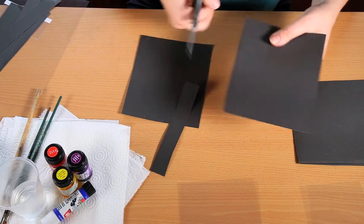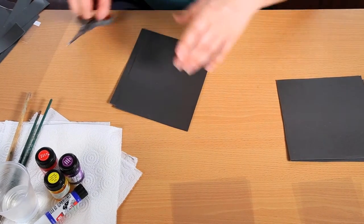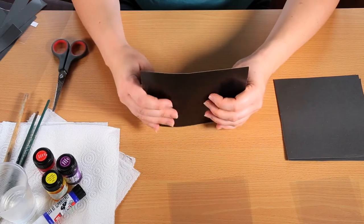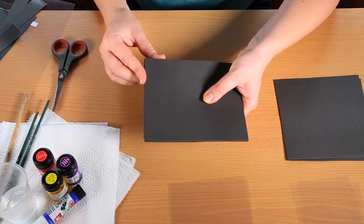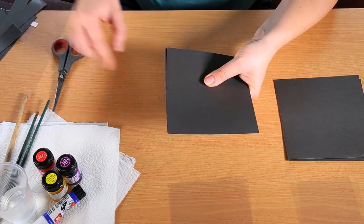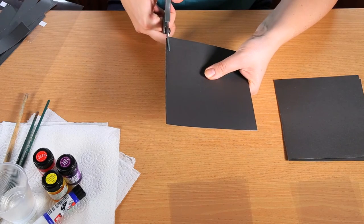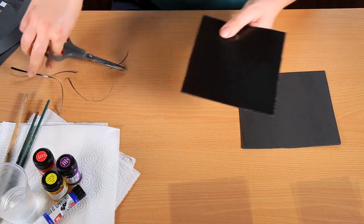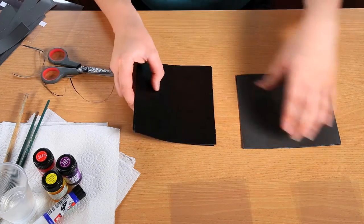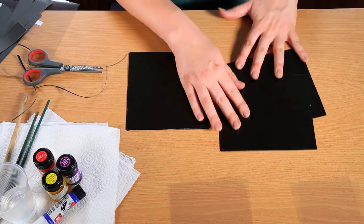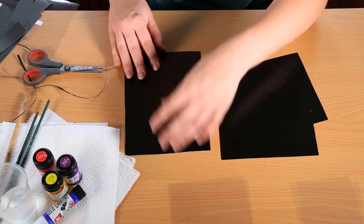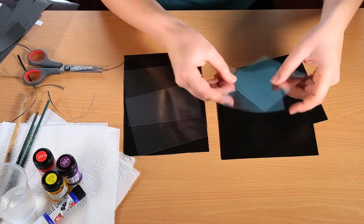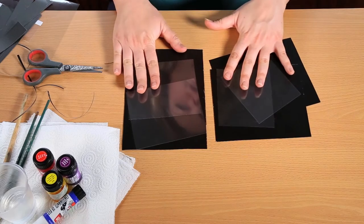Okay, so that's done. And then what I suggest you do is just double check - you want to put them against each other and just cut away any excess so that they're exactly the same size. That's really important. Okay, so that's all trimmed and looking lovely. We've got our two rectangles, our two squares, our two squares of transparent film, and we're ready to start.